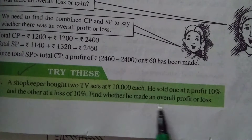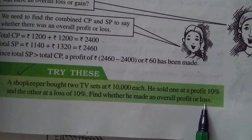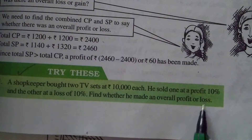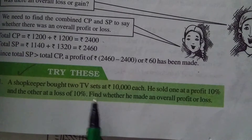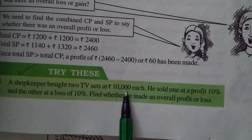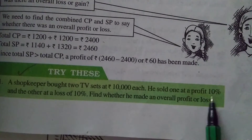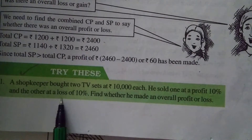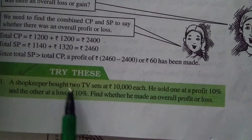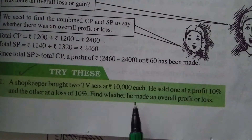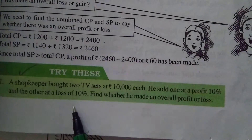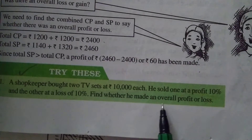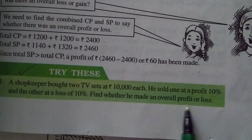He sold one at a profit of 10% and the other at a loss of 10%. Find whether he made an overall profit or loss. He bought 2 TV sets each at rupees 10,000. For one he got 10% profit, for another he lost 10%. Overall — meaning together — whether he made a profit or loss we should find.